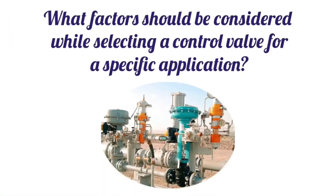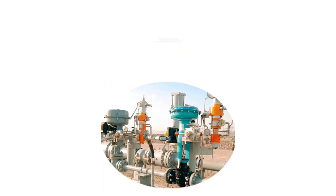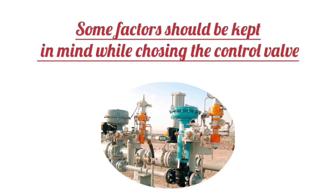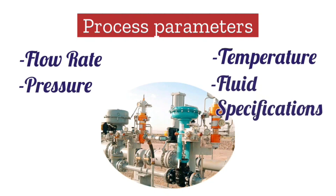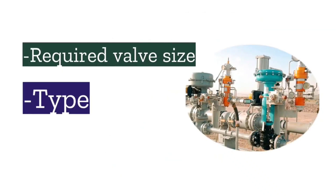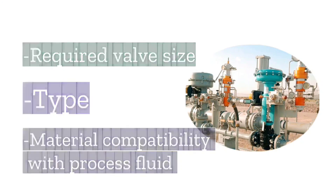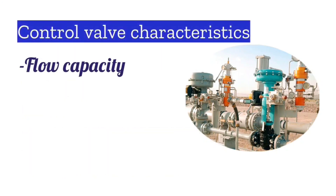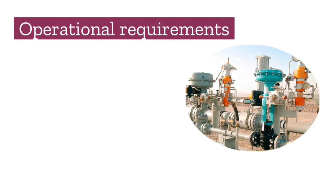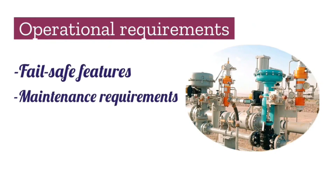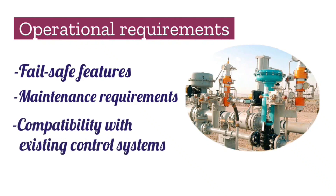What factors should be considered while selecting a control valve for a specific application? Some factors should be kept in mind while choosing the control valve, such as process parameters: flow rate, pressure, temperature, and fluid specifications. Apart from this, required valve size, its type, material compatibility with process fluid, and control valve characteristics like flow capacity, rangeability, and response time. Operational requirements are also taken care of, such as fail-safe features, maintenance requirements, and compatibility with existing control systems.